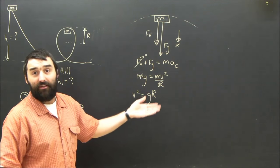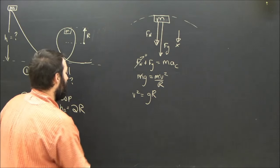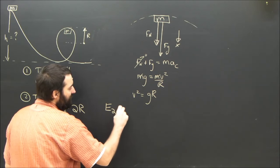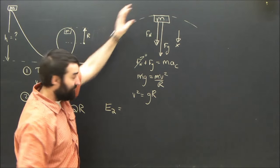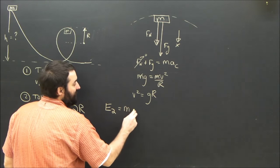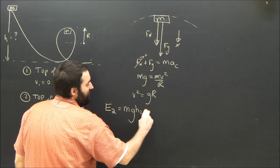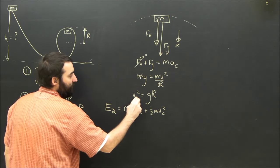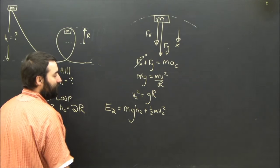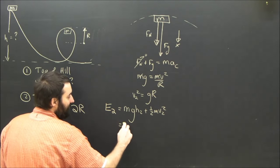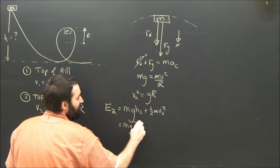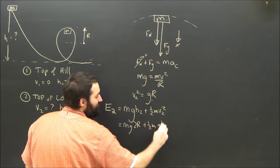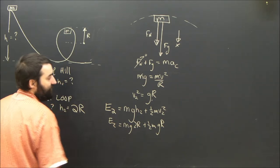I'm just going to stop right there. I could say v equals the square root of gr, but I won't, because what do we care about that for? The total energy. The energy at position 2, the energy at the top of the loop, is going to be the potential energy mgh2 plus the kinetic energy, a half mv2 squared. This is of course v2, the velocity at the top of the loop. Subbing in there, I can see that it's mg times 2r plus a half mgr. That is energy 2.